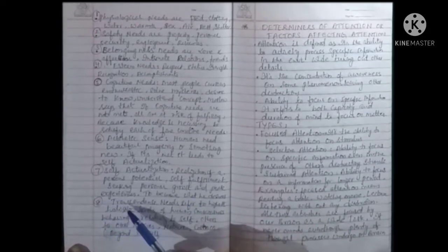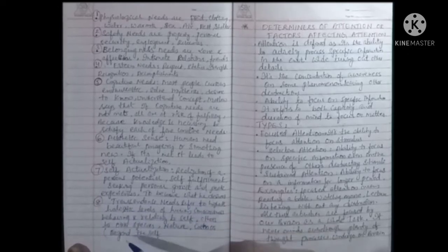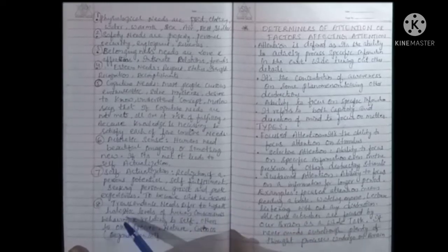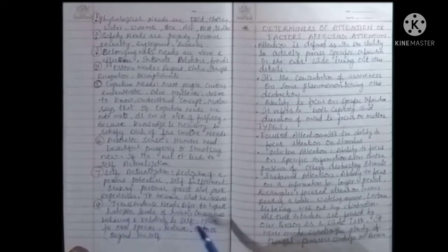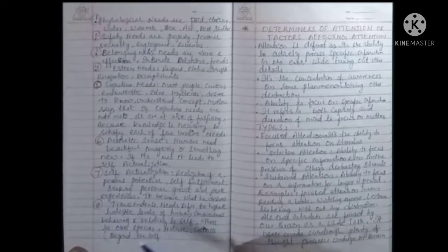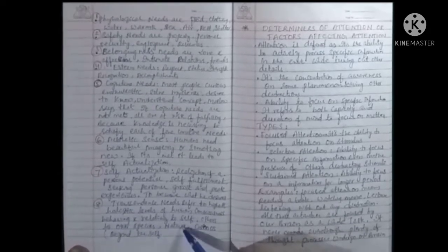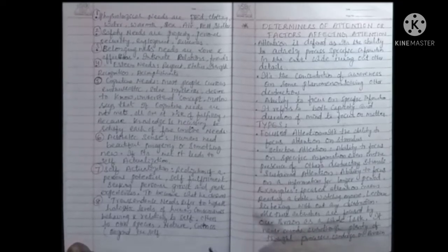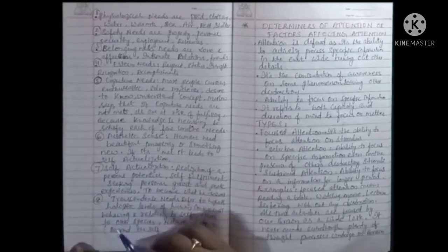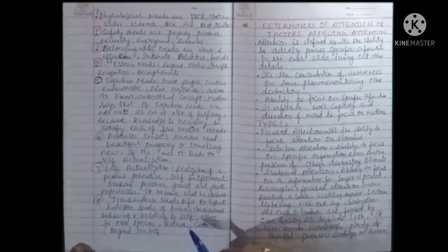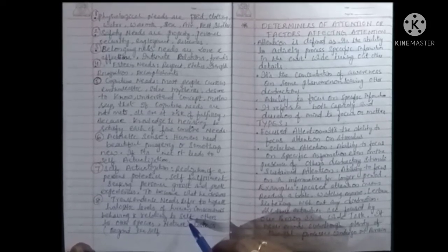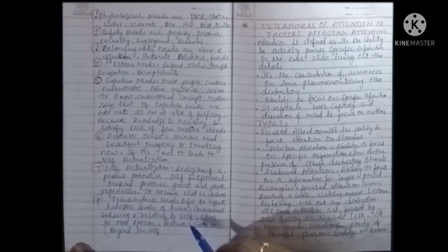Last but not least is transcendence needs, which are beyond the self. This refers to the highest holistic level of human consciousness, behaving and relating to self and others and to other species, nature and cosmos and so on. These eight needs are considered as Maslow's hierarchy needs, which are essential in everyone's life to fulfill their basic needs and to make them a successful person in their life.